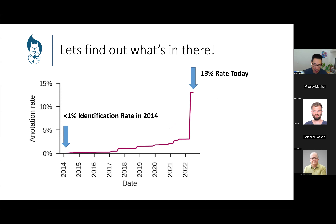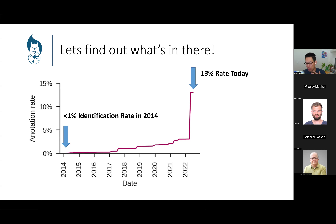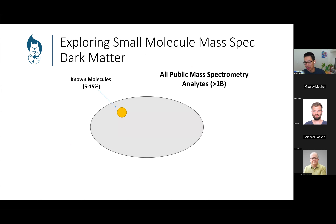Just to give us an idea of where we're at within the field — when I started my PhD 10 to 15 years ago, we were at identification rates of less than 1%. We charted our progress: back in 2014, almost nothing, then slowly over time we grew and built new tools and databases to grow this annotation rate. Depending on how you measure it, we're now in the 10 to 15% range — about 13% today.